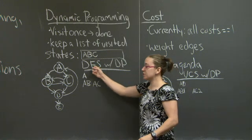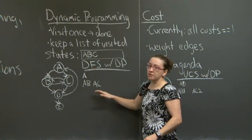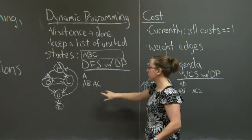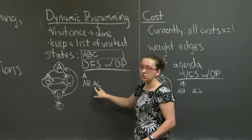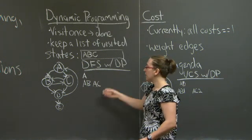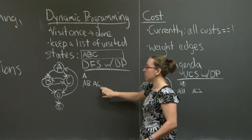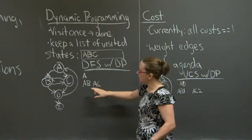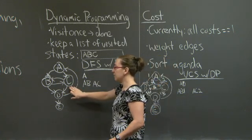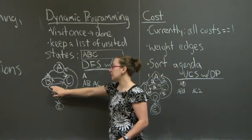If I'm running depth first search, my agenda acts as a stack, which means I'm going to take the partial path that I added most recently to the agenda, pop it off, and expand the last node in the partial path. When I expand C, I'm going to visit B and D.